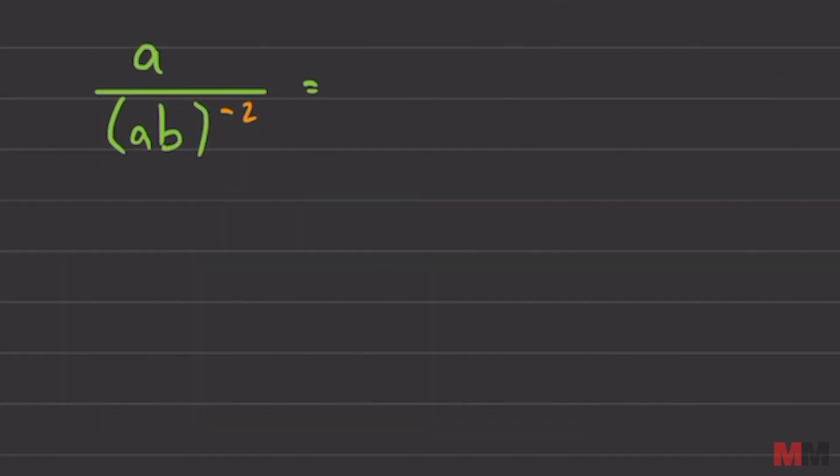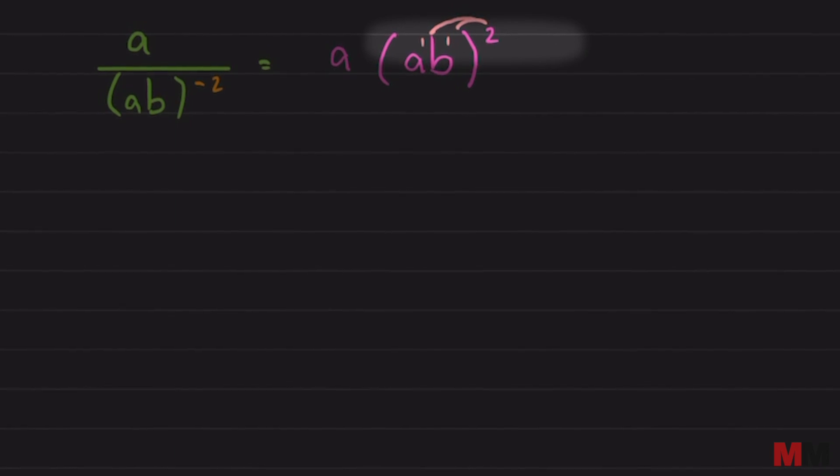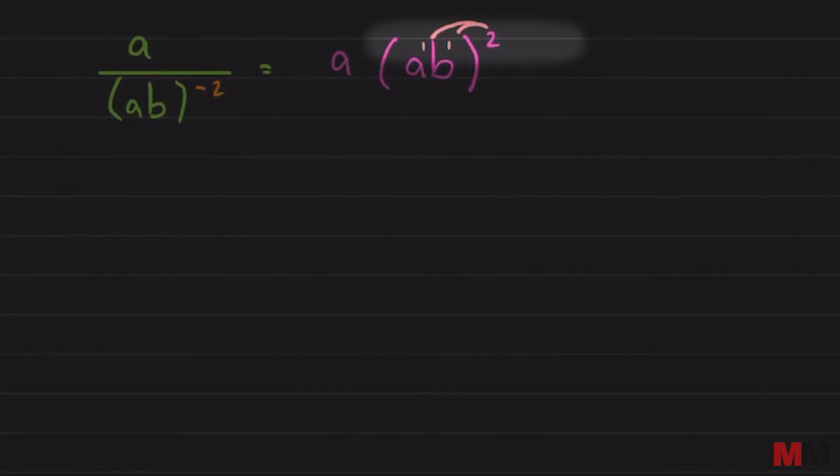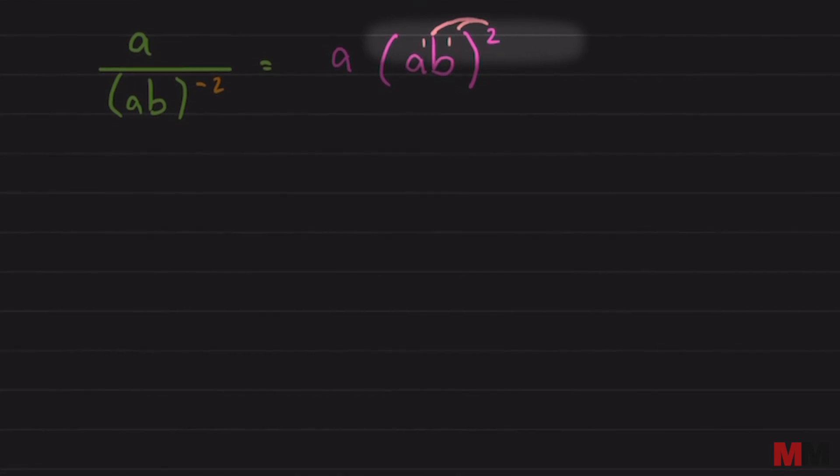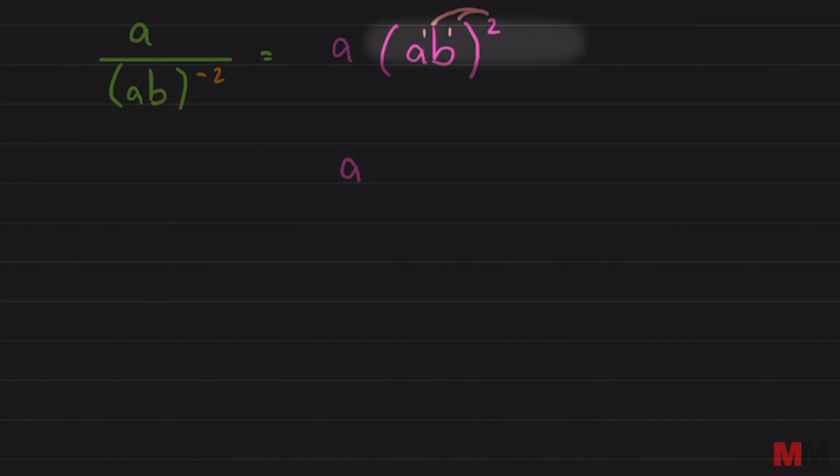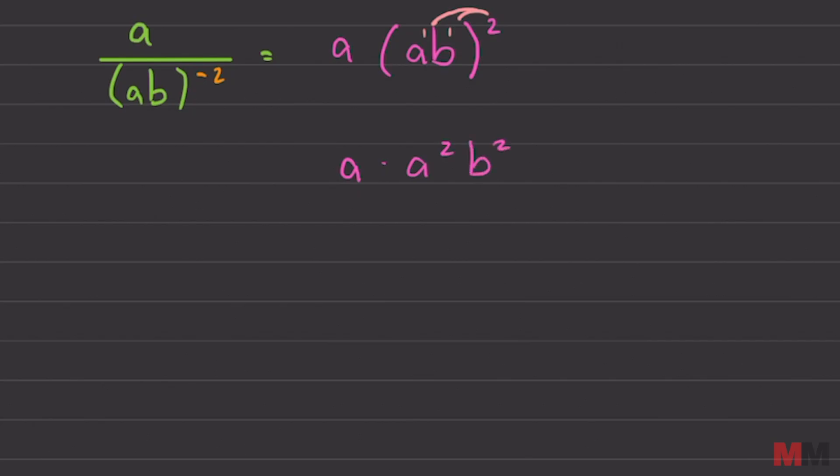Going over the last question. We got a bracket at the bottom with a negative exponent. We can switch it to the top right away. So a was at the top. Now I'm switching ab back to the top with a positive 2 as the exponent. And then apply your rules of exponents. These have a 1. If there is an exponent on the outside, distribute and you will get a times a squared b squared. And you can simplify it even further here. This has an imaginary 1. That will turn into a to the 3rd power b squared.